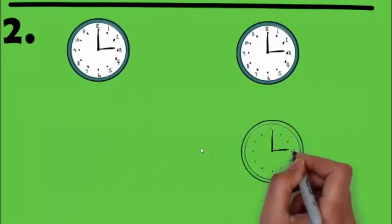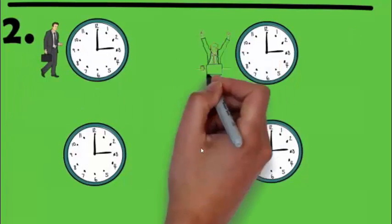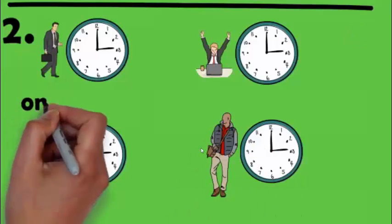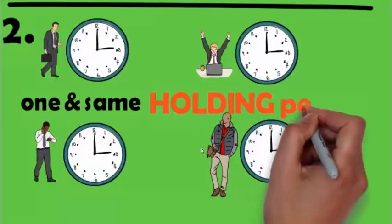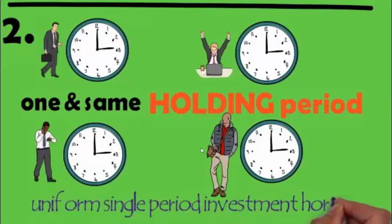The second assumption of CAPM is related with time. Now you see that there is 3, 3, 3 and 3, but investors are different. He is A, he is B, he is C and he is D. That means the time period is same, that is one and same holding period for all investors. In typical language, the second assumption is uniform single period investment horizon, that is the same horizon holding period for all the investors.